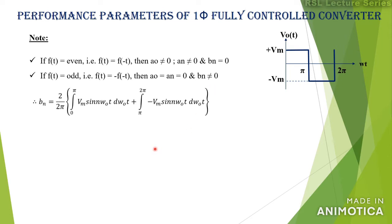The formula for finding bₙ is: bₙ = (2/2π) integral from 0 to 2π of Vm sin(nω₀t) d(ω₀t). Here, during the positive half cycle we have +Vm and during the negative half cycle we have −Vm. Splitting this integration into two parts, we can write (2/2π) times [integral from 0 to π of Vm sin(nω₀t) d(ω₀t) plus integral from π to 2π of −Vm sin(nω₀t) d(ω₀t)].